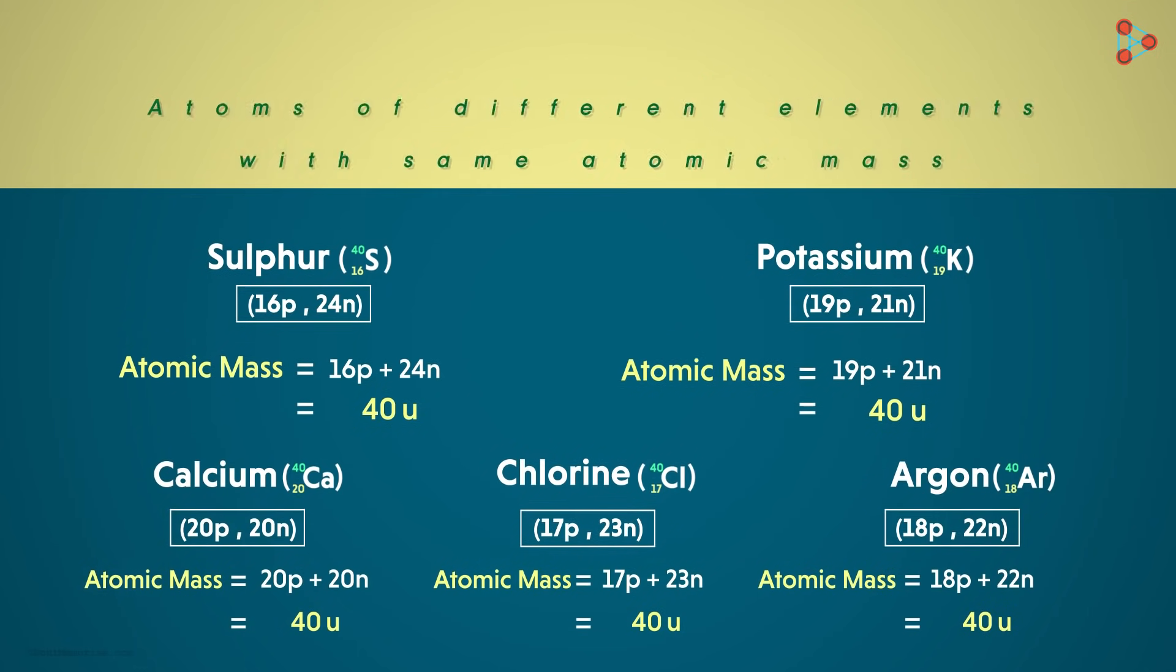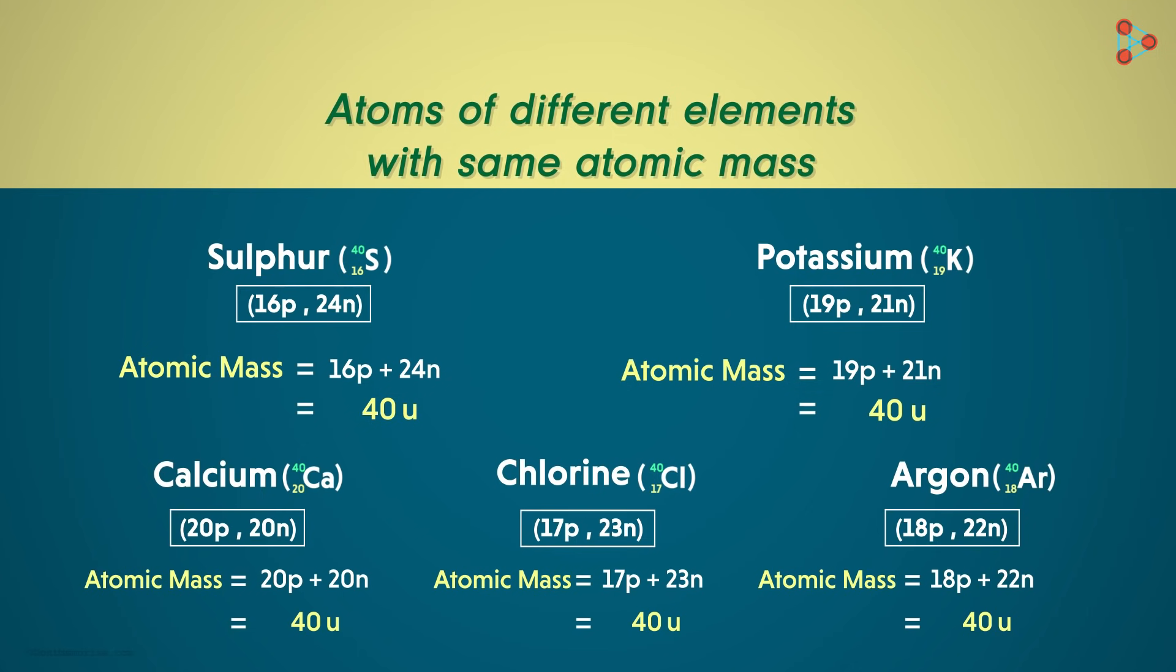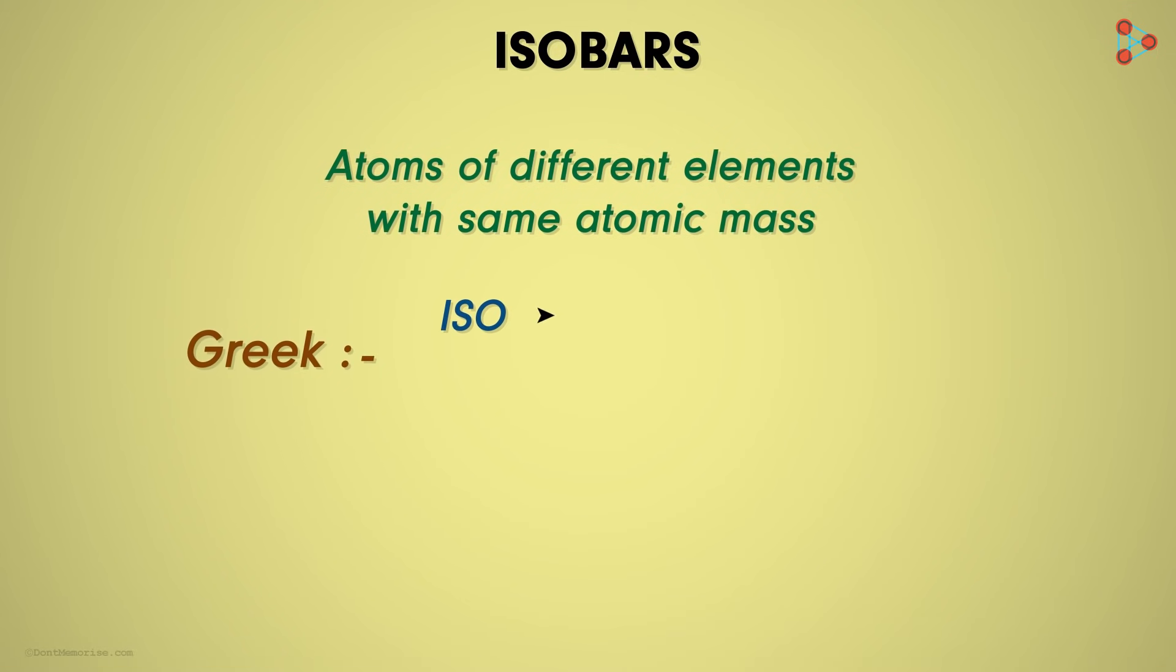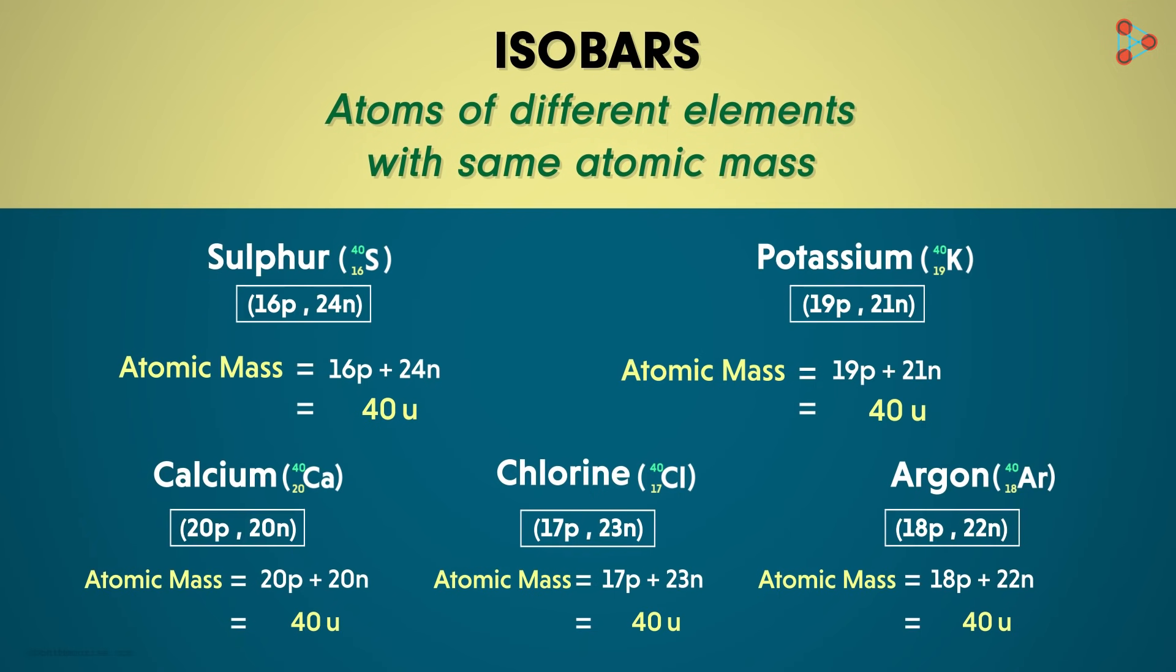Such atoms, or rather isotopes of different elements having the same atomic mass, are called isobars. The term arises from Greek: iso meaning same and baros meaning weight. Remember, if we consider two isobars, the number of protons and number of neutrons in each case will be different, but the total number of nucleons or the atomic masses will be the same.